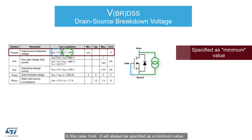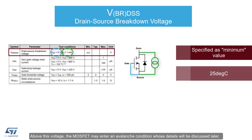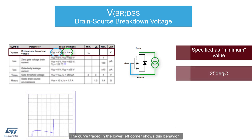It will always be specified as a minimum value. Here is guaranteed no more than 1 milliamp of drain current and drain voltage up to 400 volts when the MOSFET is at 25 degrees Celsius. Above this voltage, the MOSFET may enter an avalanche condition whose details will be discussed later. The curve traced in the lower left corner shows this behavior.